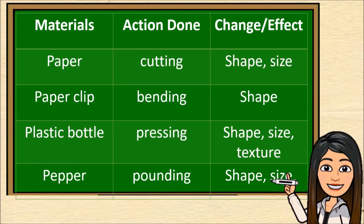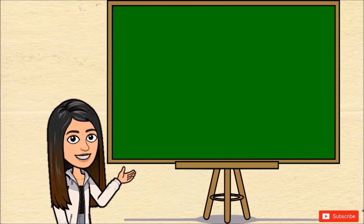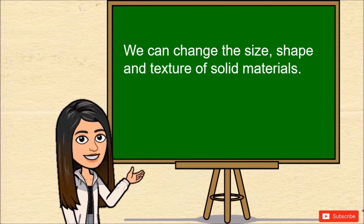Overall, here is our observation. When we cut the paper, there is a change in shape and size. When we bent the paper clip, there is a change in shape. When we pressed the plastic bottle, there is a change in shape, size, and texture. And when we pounded the pepper, just like hammering it, there is a change in shape and size. From that experiment, cutting, bending, pressing, and pounding could change the appearance of the given materials. Therefore, we could say that we can change the size, shape, and texture of solid materials through certain actions.